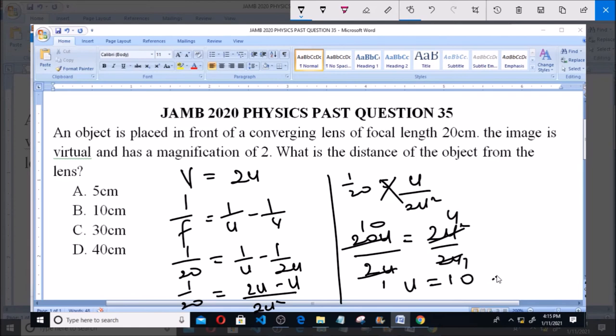So the answer to this question or the object distance from the converging lens is 10 cm, and that is option B.